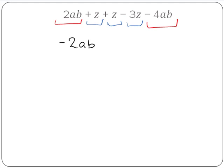And plus Z plus Z is 2Z minus 3Z will give us minus 1Z. And we can just write this as minus 2AB minus Z.